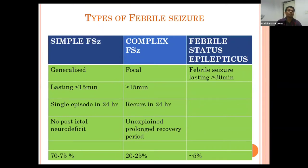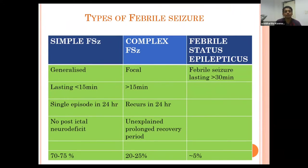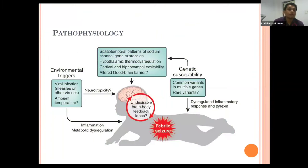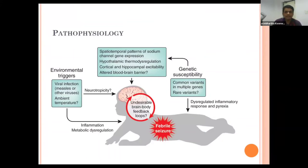The most common type is simple febrile seizure, occurring in 70 to 75 percent of cases—usually generalized, lasting less than 15 minutes, single episode in 24 hours, and no post-ictal neurological deficit. Complex febrile seizure accounts for 20 to 25 percent—focal, lasting more than 15 minutes, recurring within 24 hours, with prolonged recovery. Febrile status epilepticus is when febrile seizure lasts more than 30 minutes; its incidence is about 5 percent. The pathophysiology is not fully understood but involves genetic susceptibility, environmental triggers, and neurodevelopmental vulnerability.